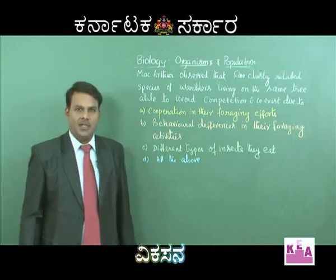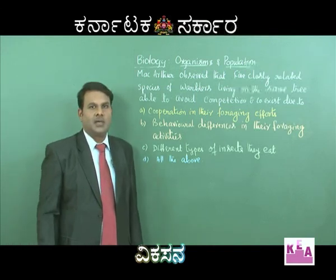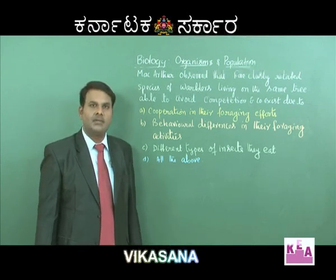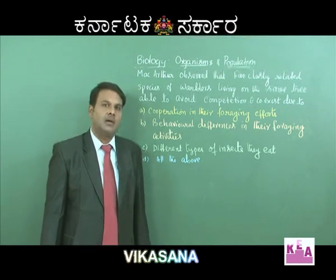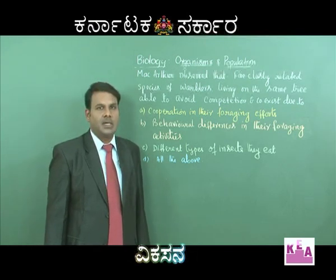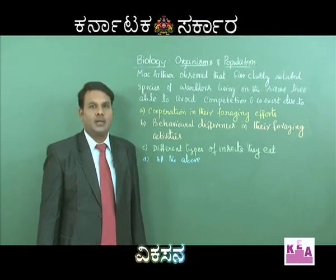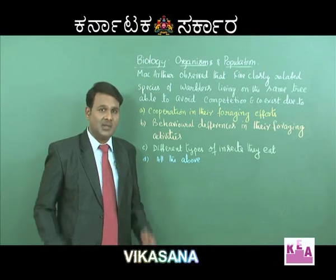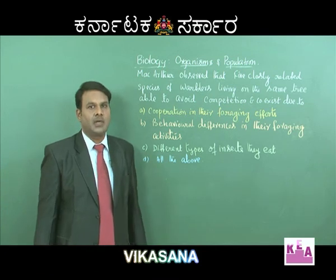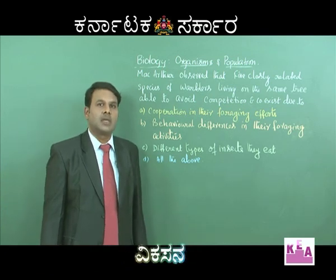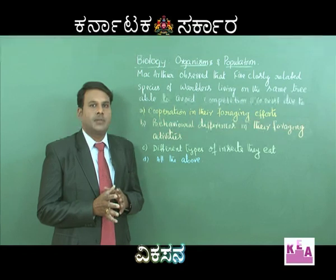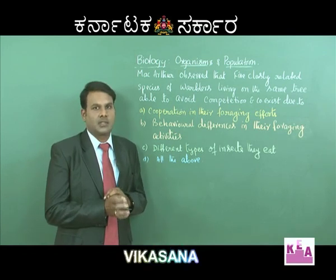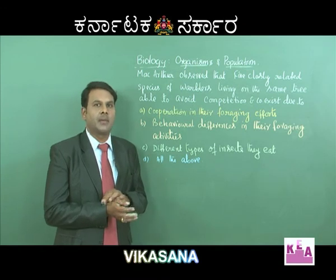In a competition between two species, one is called the superior competitor and the other the inferior competitor. According to Gause's competitive exclusion principle, in a habitat the superior competitor excludes the inferior competitor. However, in some habitats, both competing species sharing the same resources coexist by partitioning the resources — this is called resource partitioning.